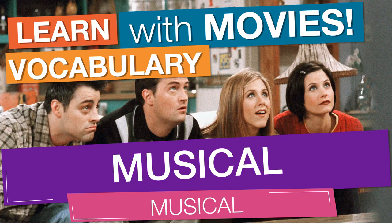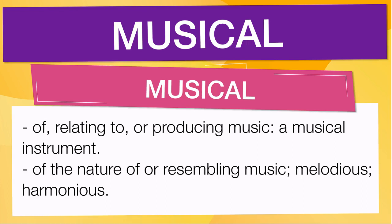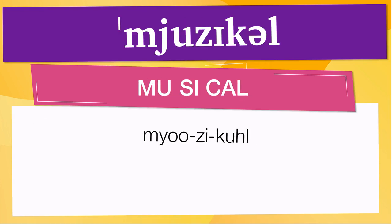In English vocabulary, we will learn the word 'musical.' It means of, relating to, or producing music — a musical instrument. It also means of the nature of or resembling music, melodious, harmonious. Pay attention to the pronunciation. The first one is the word represented using the International Phonetic Alphabet. To pronounce 'musical,' have in mind that the size of the syllable indicates where the accent or stress is. In this case, the accent is in the first syllable, corresponding to 'mu.'